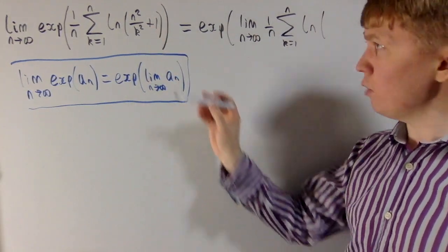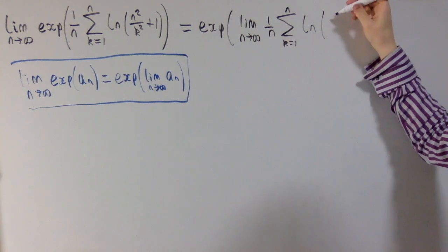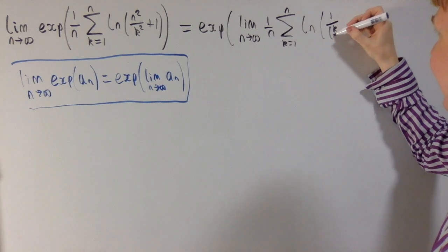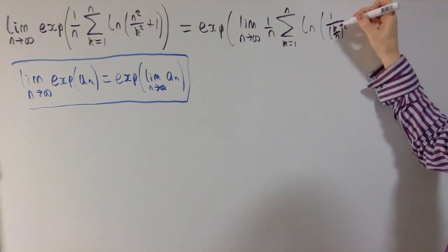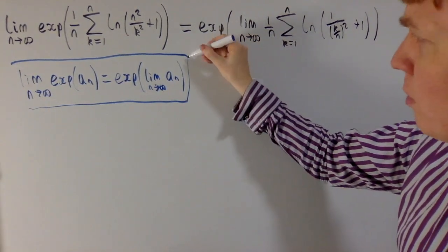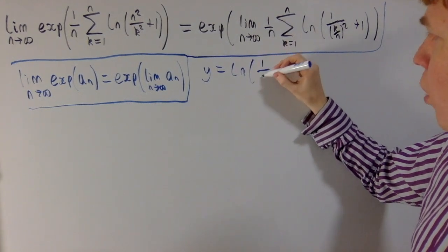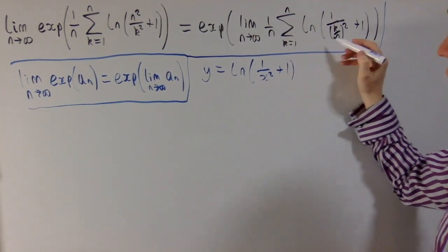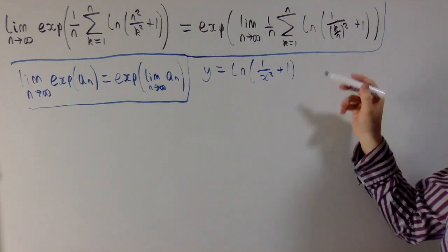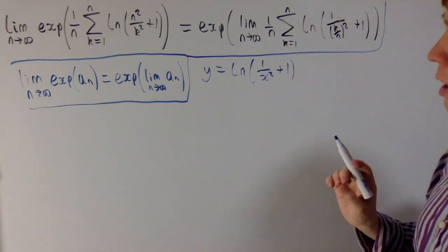Instead of writing n squared over k squared, I'm going to write this as 1 over (k over n) all squared, which is the same. This is helpful to illustrate what's going on, because now I'm interested in the function y equals ln(1 over x squared plus 1). This function is evaluated at 1 over n, at 2 over n, at 3 over n, and so on, all the way up to n over n, going up to 1. We add them together and multiply by 1 over n.